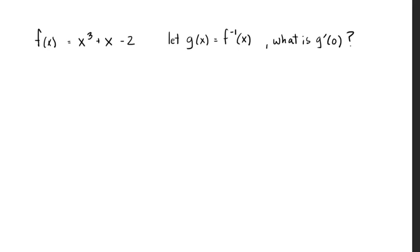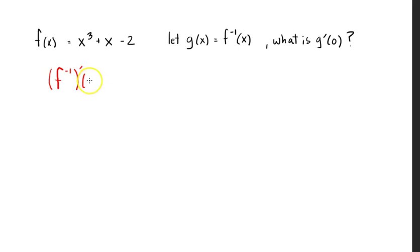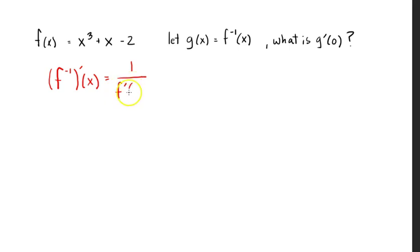Many people find this other method to be a little better — for some people it's just easier to think about. This is the equation you want to use for solving this without using implicit differentiation. If we have an inverse function and we're looking for the derivative at some value x, it is equal to 1 over — in other words, the reciprocal — of the derivative of the original function, using f inverse of x.